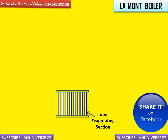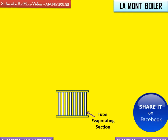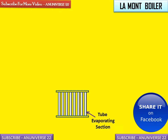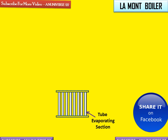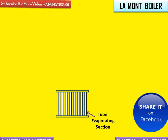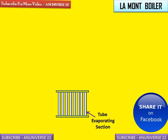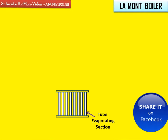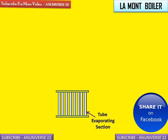Now we will discuss the main parts of the La Mount boiler. The first is the tube evaporating section. The evaporator tubes, or water tubes, are situated at the furnace wall, which increases the heating surface of the boiler. They are also positioned on the up side and down side of the furnace. The main function of these tubes is to evaporate water into steam and to cool down the furnace wall.